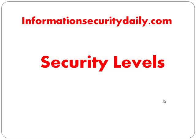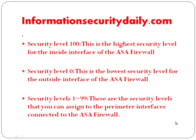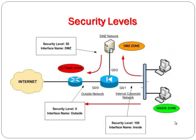Security Levels. The security level designates whether an interface is trusted or untrusted relative to another interface. The primary rule for Security Levels is that an interface with a higher security level can access an interface with a lower security level. Security Level 100 is the highest security level for the inside interface of the ASA Firewall. Security Level 0 is the lowest security level for the outside interface. Security levels 1–99 are assigned to perimeter interfaces connected to the ASA Firewall.